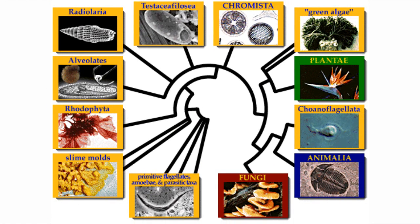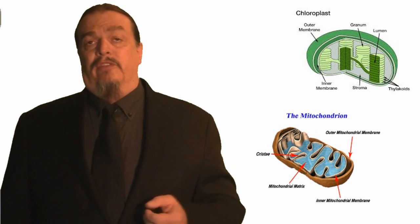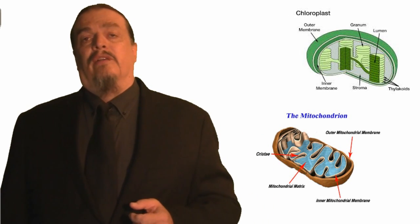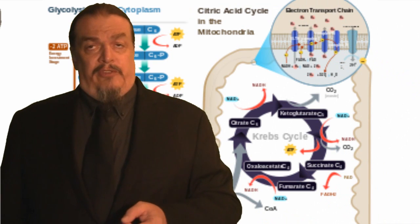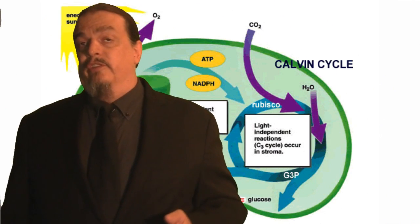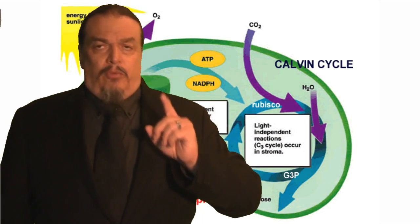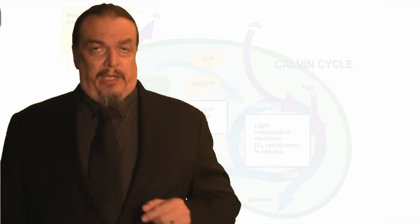The more mitochondria a cell has, the more energy they'll produce. Plants have both mitochondria and chloroplasts, and they're both energy-producing cells turned to organelles. The explanations of how mitochondria perform cellular respiration and how chloroplasts conduct photosynthesis will both require their own videos. But there's one more interesting feature about mitochondria that I want to explain now.